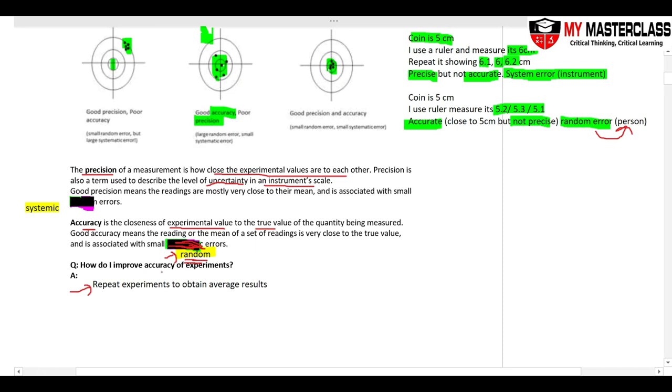How do I improve accuracy of these experiments? Repeat these experiments to obtain the average result. When I obtain average result, this will minimize human error. How do I improve precision? Make sure that your equipment has no errors.